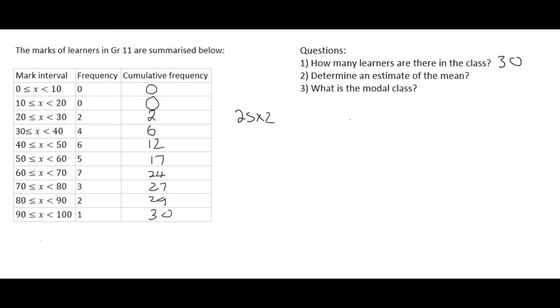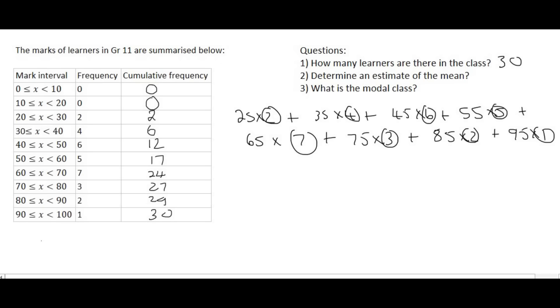So carrying on it would be 25 times 2 plus 35 times 4 plus six people got 45 so that'll be 45 times 6. And then we carry on like that. And you see if we had to add these numbers up the 2, the 4, the 6, the 5, 7, 3, 2 and 1 that'll give you 30 people. So we've taken all 30 people into account. So you would add all of that together which would give you a total of 1680. You would then have to divide that by the number of people which is 30 and that'll give you a value of 56. So the average mark for this class was 56 percent.